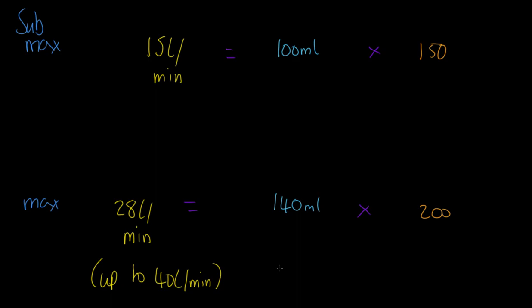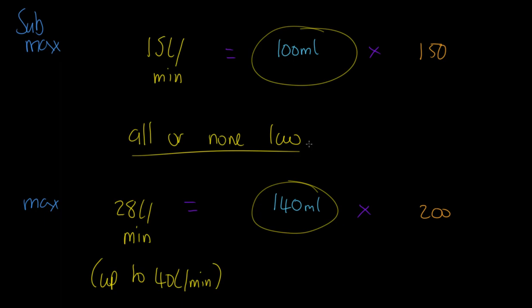How does stroke volume actually go up? The heart operates by the all-or-none law - the heart beats maximally or not at all. Every single contractile phase is a maximal full contraction of every myocardial fiber. How does stroke volume increase if it can't contract more forcefully?